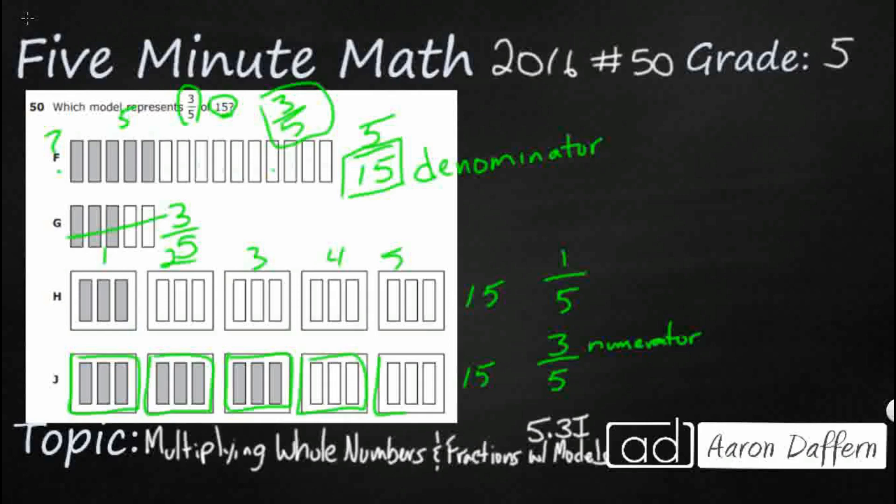All this looks like now is I've got five big groups. I've got one, two, three of them that are shaded in. So I am thinking J is going to be my answer, but here's the question.